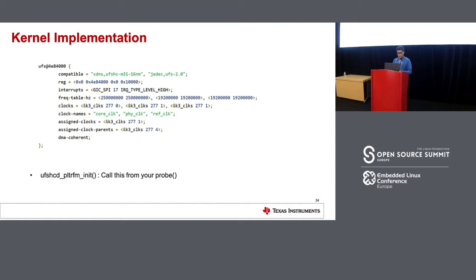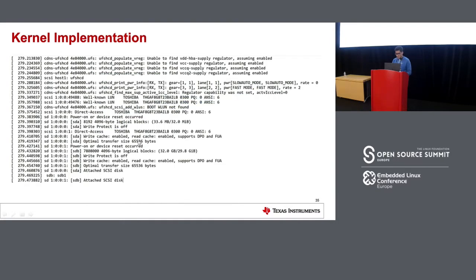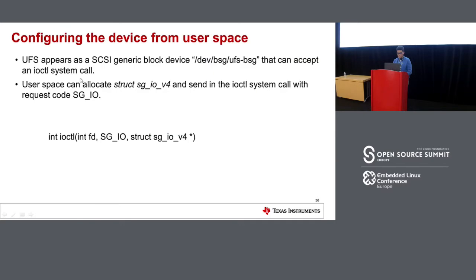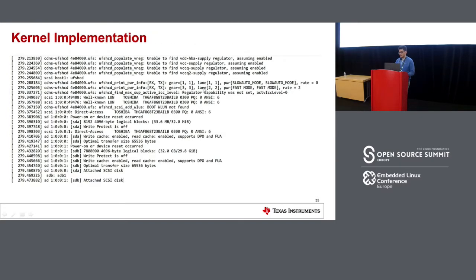This is an example of a UFS device coming up: the UFS HCD is detected as a SCSI host. It first comes up in gear one with one active lane, but quickly switches to gear three with the full bus width of two lanes. It detected two well-known logical units, but none of them were a boot logical unit. It then detected normal logical units: SDA with 32 MB space allocated, and SDB with 32 GB space allocated, along with a bunch of other configurations for both.